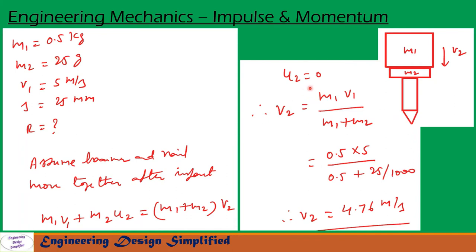Let us assume in this problem the hammer and nail move together after impact. So they move together with a velocity v2 after impact. So initial velocity of the hammer is given v1 equal to 5 meters per second, and the final velocity of both hammer and nail, let us call v2 meters per second.